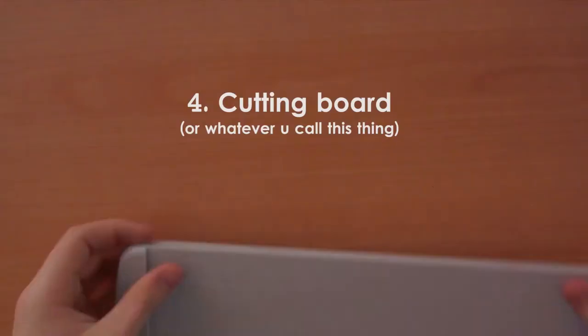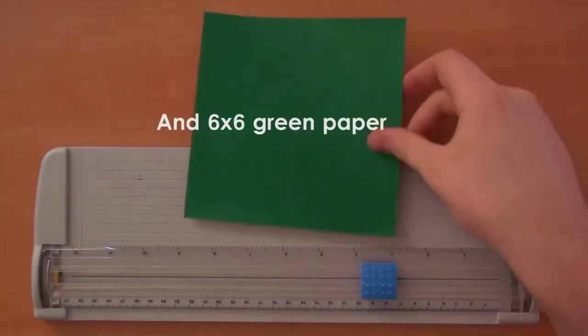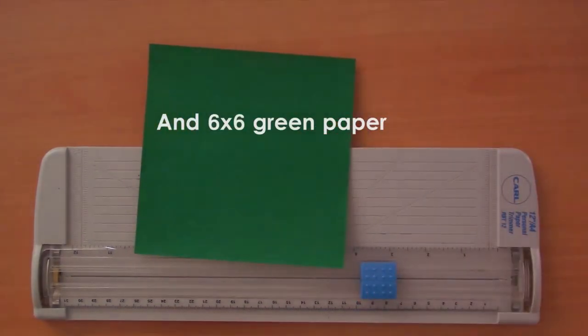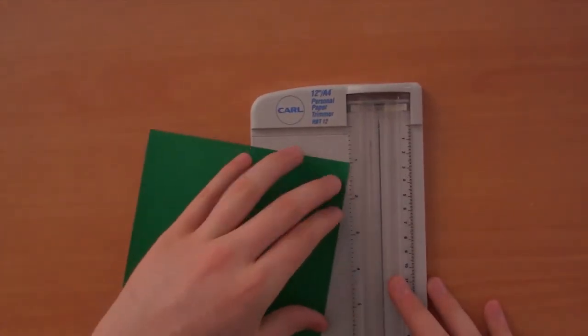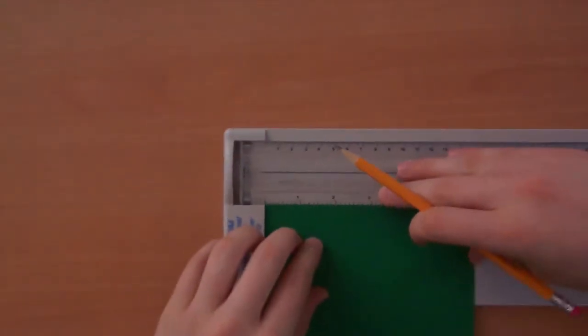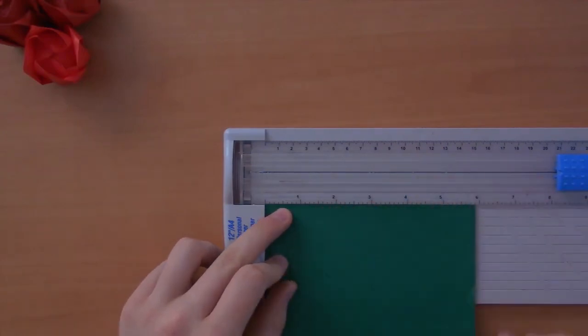This will bring you to step four with the cutting board. You're going to take your six by six piece of green paper and now you're going to cut an even smaller piece of green paper out of this. You're going to take your pencil and at this point I marked the inch and a half mark but if I were you I'd go a little bit bigger.